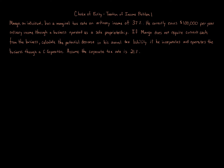This question is quick but very important. We've looked at the choice of entity and the effect of losses when comparing C corporations versus flow-through entities like S corporations or partnerships. This is the effect of income. Right now Mango is an individual with a business operated as a sole proprietorship, which is a flow-through entity — it flows through to the owner. So it's one hundred thousand dollars per year of ordinary income.